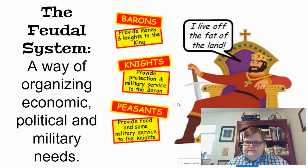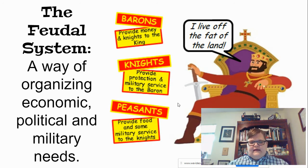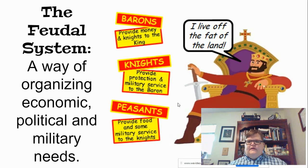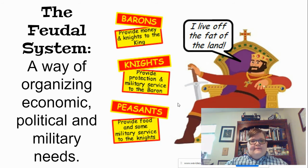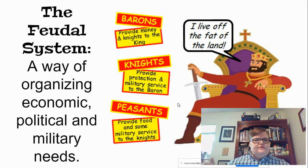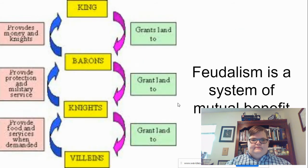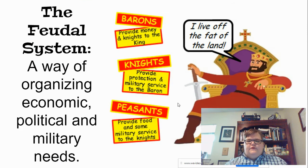The feudal system, defined — since this is your vocabulary — is a way of organizing economic, political, and military needs. In this system, the king lives off the fat of the land, just sitting there and ruling. The barons provide money and knights to the king. The knights are hired by the baron and provide protection, service, and military service to the baron, while the peasants provide food and some military service to the knights. If you need to pause to take a note about this, please do so now.